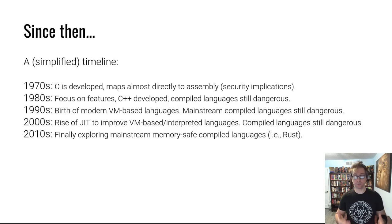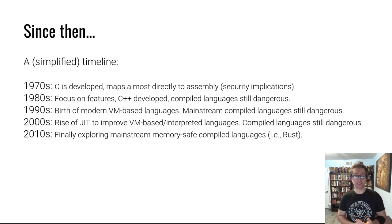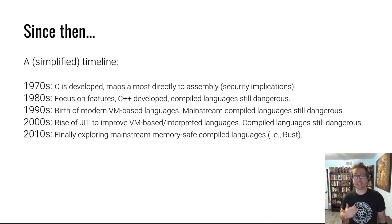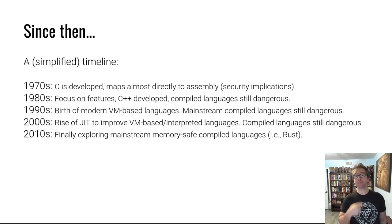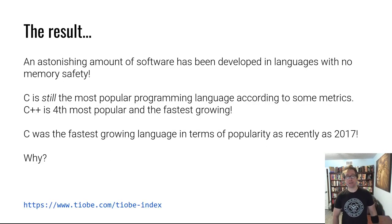In the 90s, the idea of VM-based languages like Java came about, but it was too late. Mainstream compiled languages were everywhere at that point - Linux was born, the Berkeley Software Distribution was born, Windows was born, written in C++. All fast compiled, memory-unsafe languages. Throughout the 2000s and into the 2010s, compiled memory-unsafe languages persisted. People finally started thinking about how to replace all this C code with something that is still fast but safe - but it's really just the beginning of that effort.